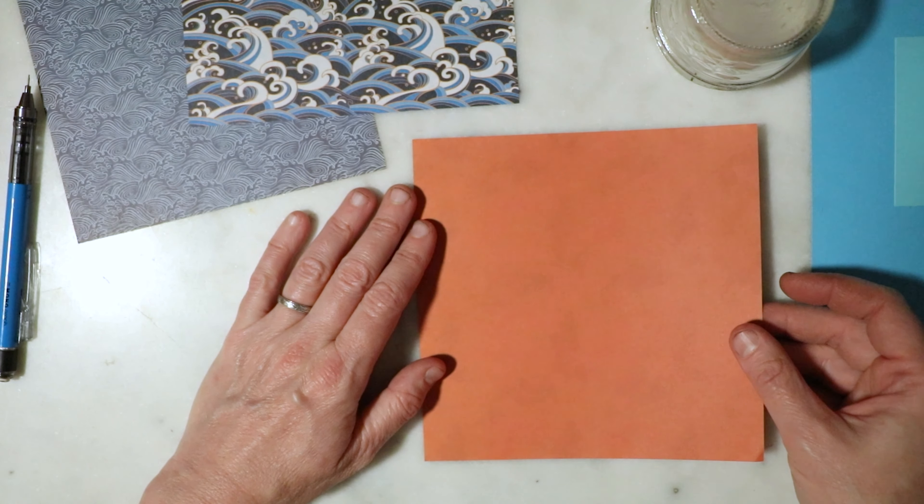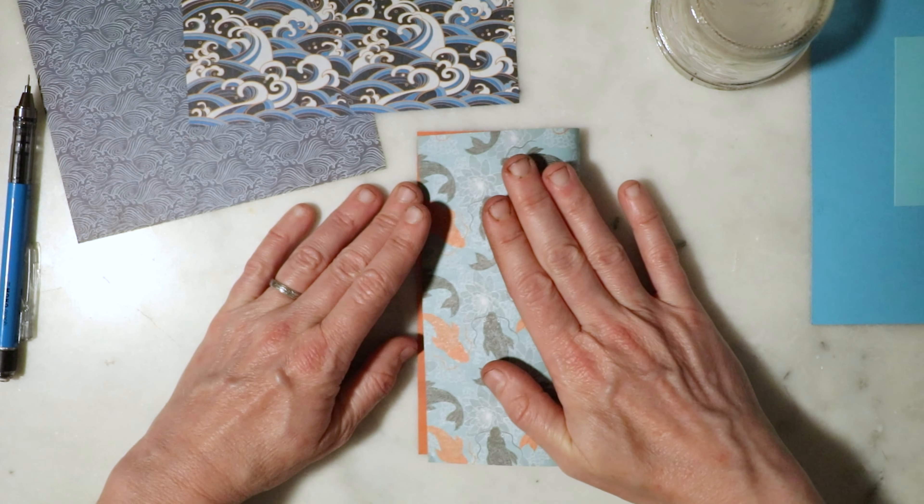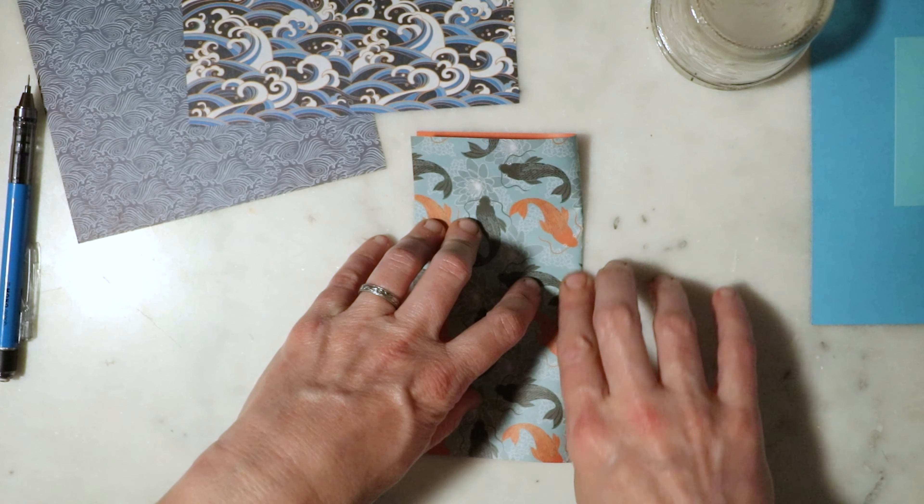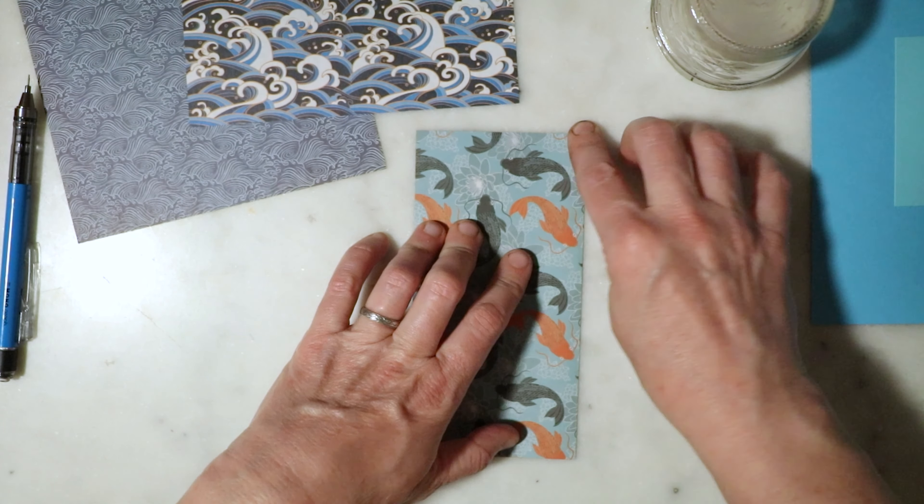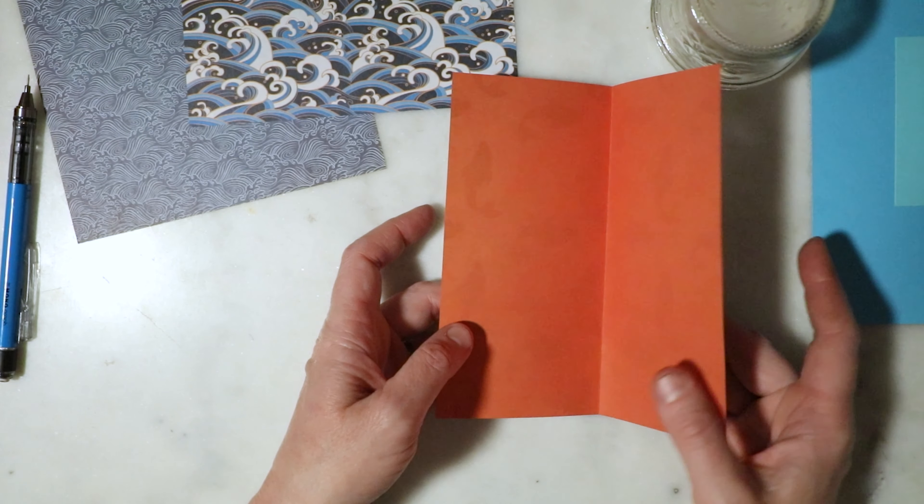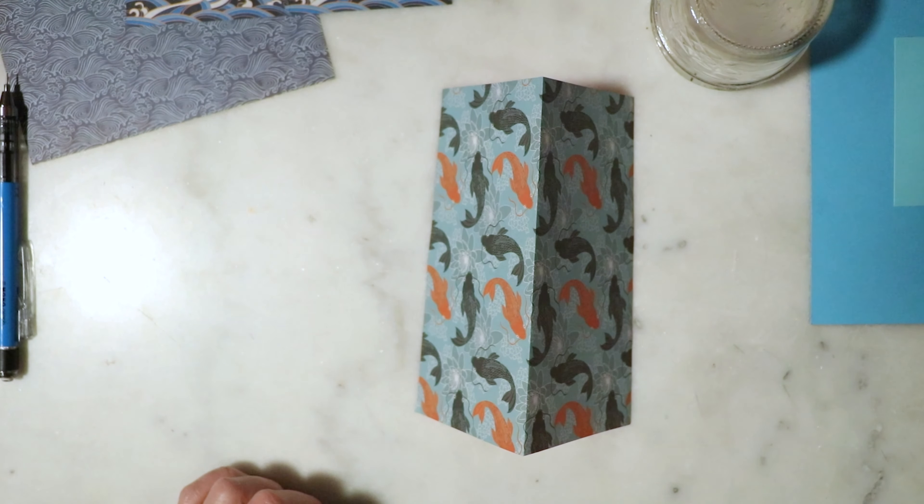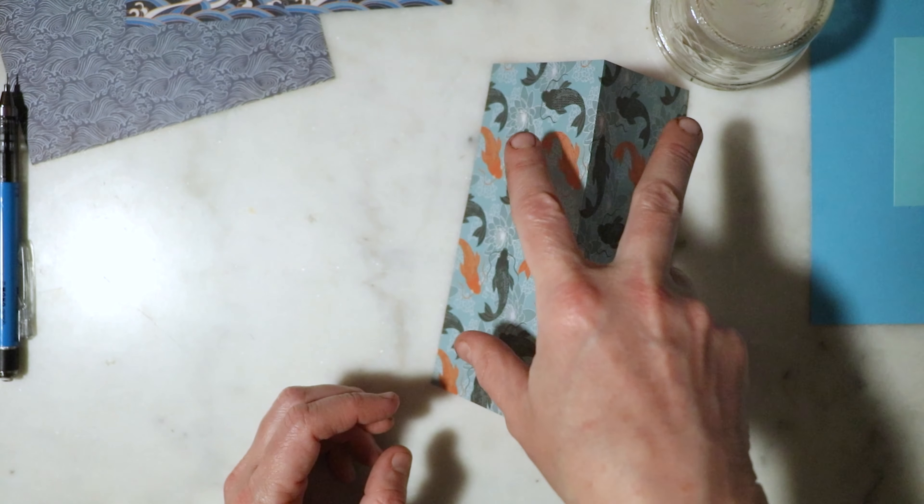We're going to start by folding the paper in half. I'm going to fold the fish side to the outside and the orange side inside. Now I have an inside and an outside - the outside is the fish side and the inside is this bright orange side. I should be able to sit it right side up like a tent, a little triangle tent.